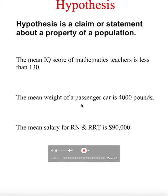Another example: the mean weight of a passenger car is four thousand pounds. Again, this is just a claim — it can be more or it can be less. Similarly, the mean salary for a registered nurse and respiratory therapist is ninety thousand dollars. These are all just statements or claims.